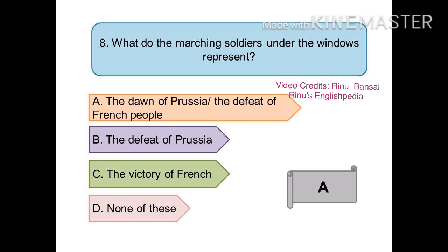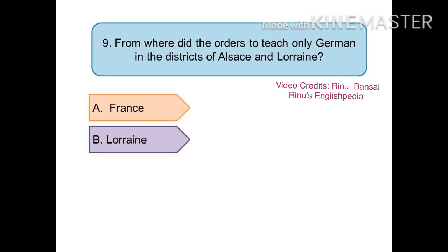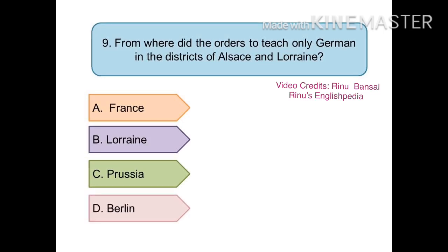The next question is: from where did the orders come to teach only German in the districts of Alsace and Lorraine? The options are (a) France, (b) Lorraine, (c) Prussia, or (d) Berlin. The right answer is (d) Berlin.